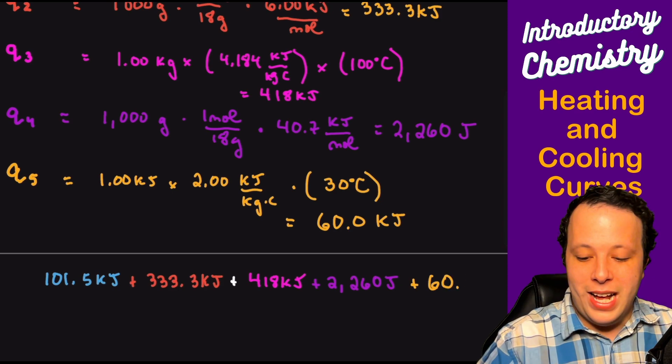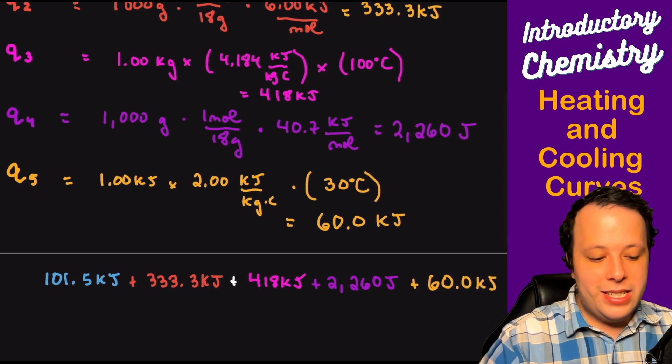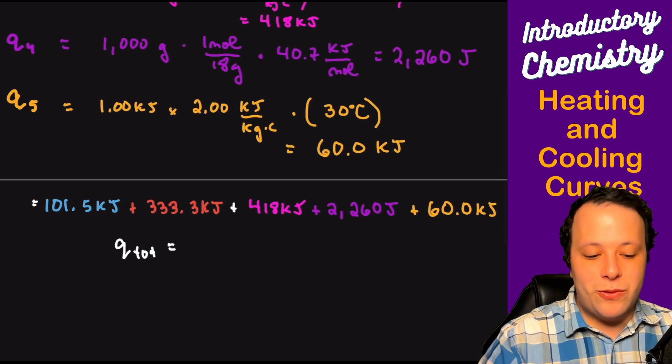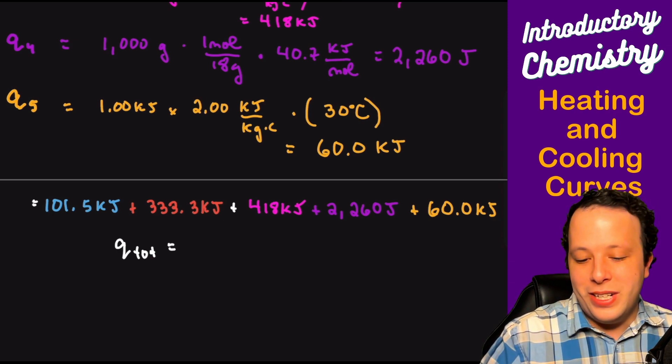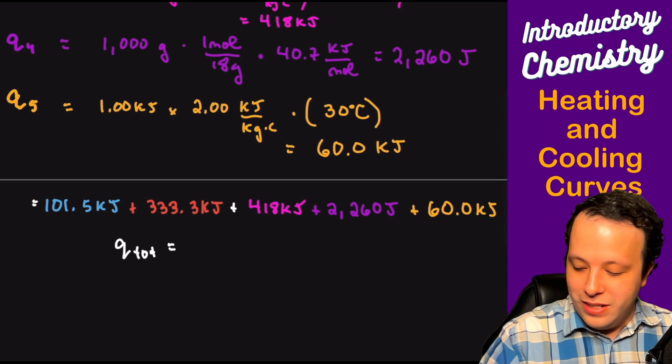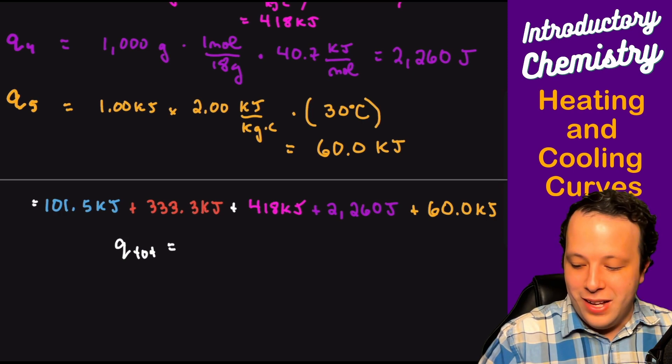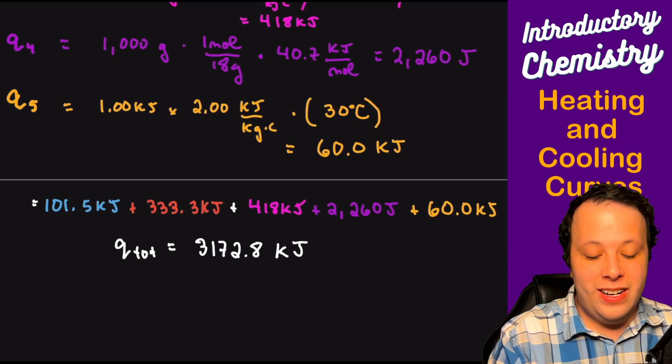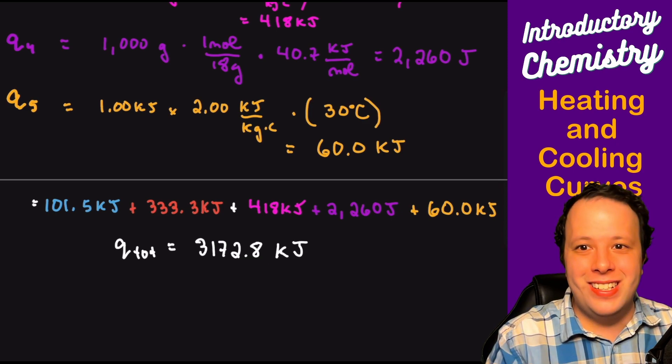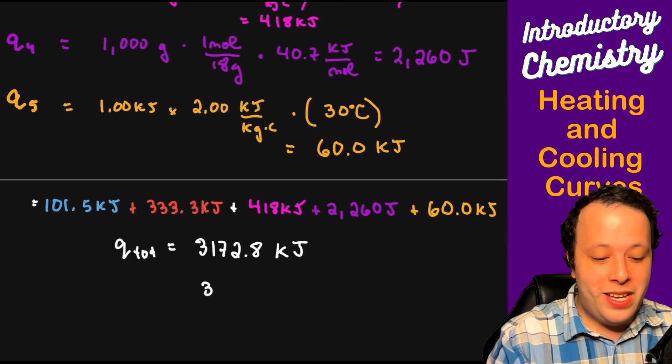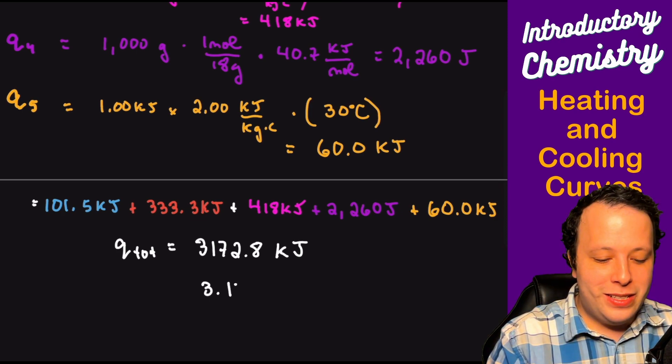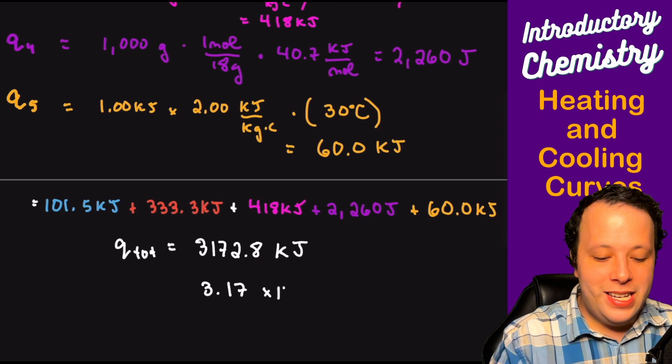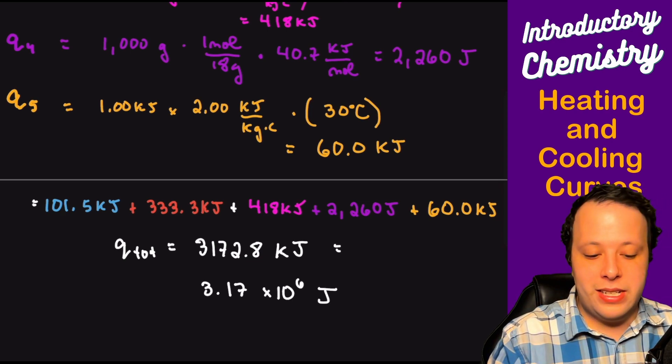And what we are going to do is we're going to add up all of these little pieces together and that's going to make our total energy as a result. We're going to take 101.5 plus 333.3 plus 418 plus 2260 plus 60 kilojoules. And once we do all that, we're going to get a massive value of 3172.1 kilojoules of energy. That's a lot of energy. To put that in perspective, if you wanted to have that in joules, that would be about 3.17 times 10 to the sixth power of joules. So that is a lot.